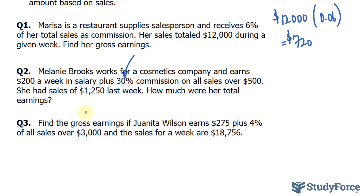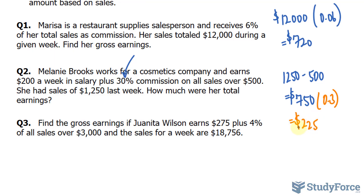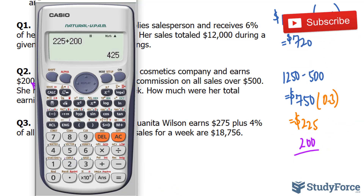She earned more than $500, but we need to find how much more. We subtract $500 from $1,250 and end up with $750. So $750 worth of sales will be subject to the 30% commission. We multiply $750 by 0.3, which gives us $225. She also earns her base salary of $200 regardless of sales. So $225 plus $200 gives us total earnings of $425.